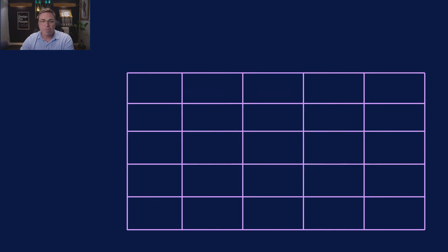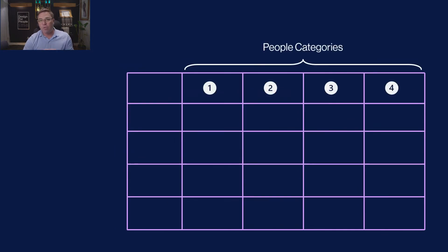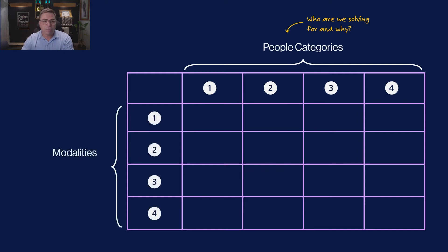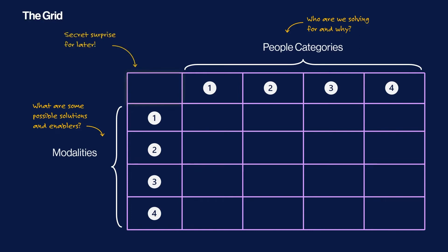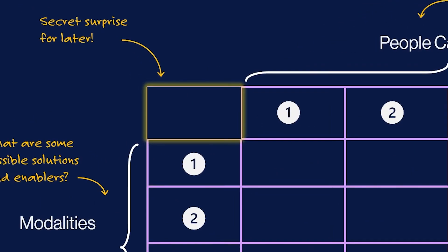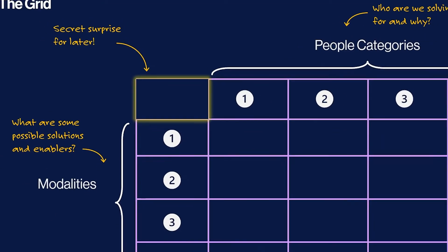First, let's start by drawing out a grid. I'm going to create a 5x5 grid and explain each of these components. At the top is focused on all the people categories — things we want to surface about who we are solving for and why. Within the rows, we have what I call modalities: possible solutions and enablers that can help solve for those people problems. There's also one extra little box up here, which is a secret surprise for later.